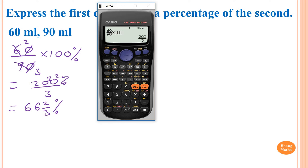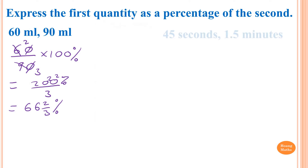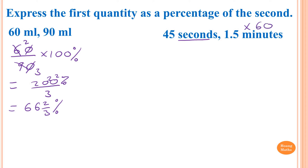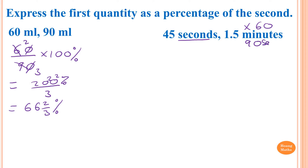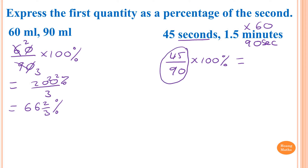Next: 40 seconds and 1.5 minutes. The units differ, so convert minutes to seconds first. 1.5 minutes times 60: one minute is 60 seconds and half a minute is 30 seconds, so together that's 90 seconds. Now all we need is 40 out of 90 times by 100 percent. You know that 40/90 simplifies, and 45 over 90 is a half — 50 percent.